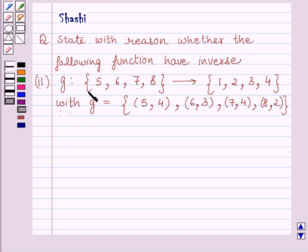g is a function from set {5, 6, 7, 8} to set {1, 2, 3, 4} with g equal to the set of ordered pairs (5,4), (6,3), (7,4), and (8,2).